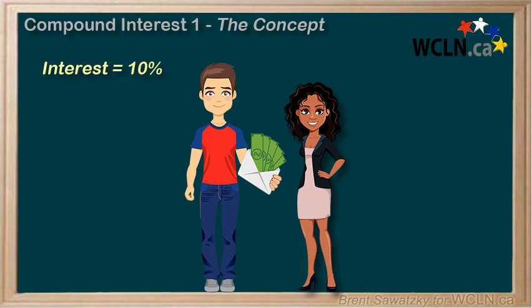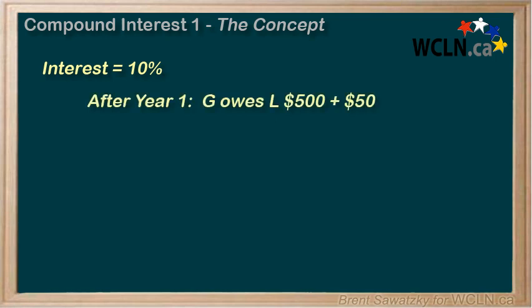The first year flies by and Linda runs into Jerry. Jerry says he'd really like to keep borrowing her money and asks to continue paying the 10% for holding on to it. Linda agrees to continue the loan using their 10% per year interest arrangement. After one year, Jerry owes Linda I = PRT, or 500 times 0.10 times one year, equals $50 in interest, plus the original $500, for a total of $550.